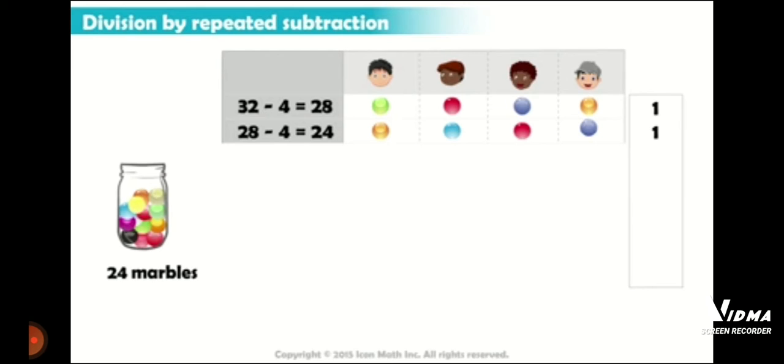Each child till now has got two marbles each. Now out of this 24 we have to again distribute. Again each child will get one marble. Now we have 20 marbles in the jar. So earlier we were having 32, and now we are having 20 marbles.